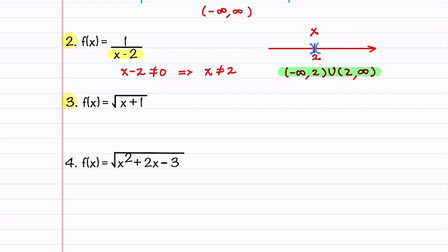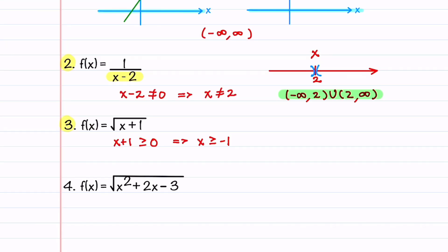Our third example is f(x) equals the square root of x plus one. This is an example of a radical function. With radical functions, if the root is an even integer such as a square root or a fourth root, we need to make sure that whatever is inside the root is greater than or equal to zero. Our restriction is that x plus one has to be greater than or equal to zero, which means x is greater than or equal to negative one. We put a bracket at negative one pointing to the right, so the domain is all real numbers x from minus one to infinity.